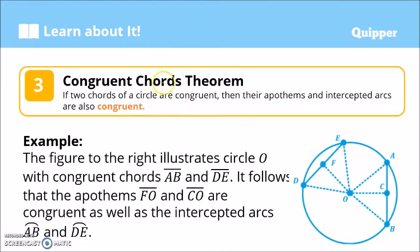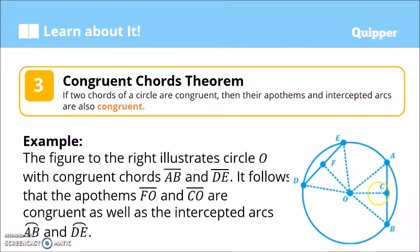The next is the Congruent Chords Theorem. If two chords of a circle are congruent, then their apothems and intercepted arcs are also congruent. In this figure, circle O has congruent chords AB and DE. It follows that their apothems are also congruent, as well as their intercepted arcs — arc AB is congruent to arc DE.